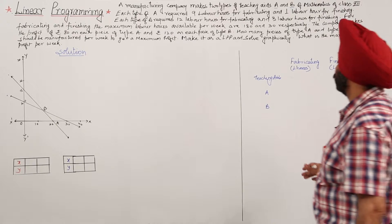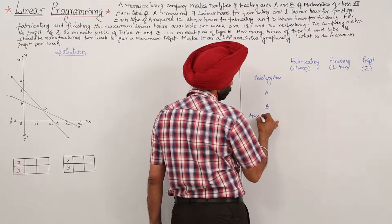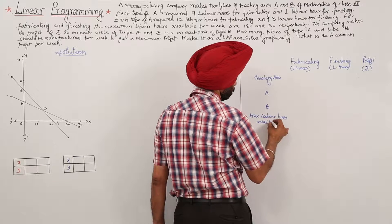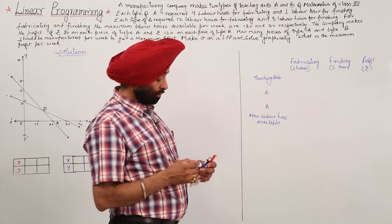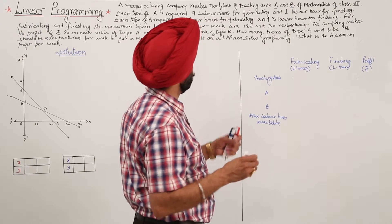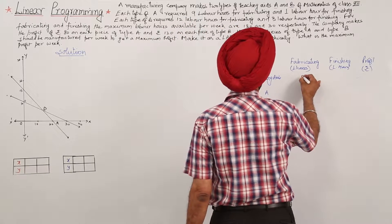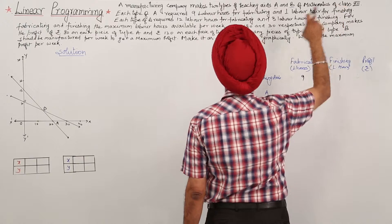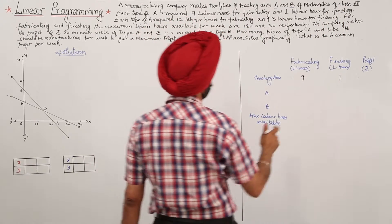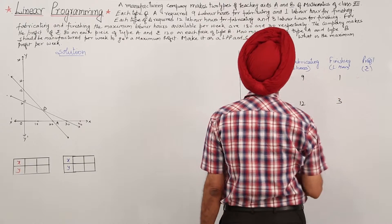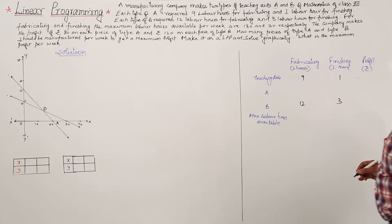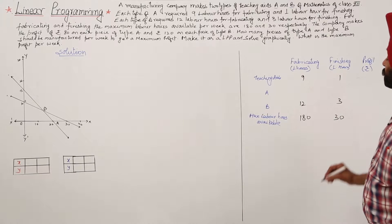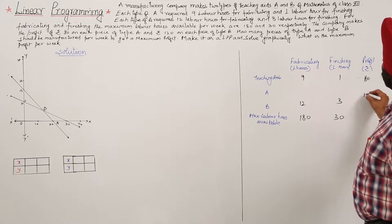Maximum labour hours available. This is the data we are going to fill in the table. Type A: 9 labour hours for fabricating and 1 labour hour for finishing. Type B: 12 labour hours for fabricating and 3 labour hours for finishing. Maximum available hours: 180 and 30. Profit is Rs. 80 and Rs. 120.